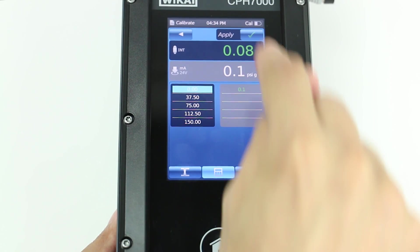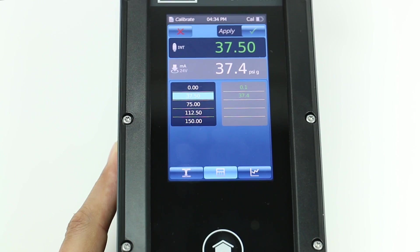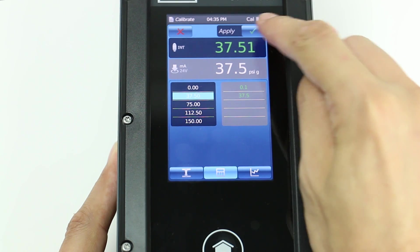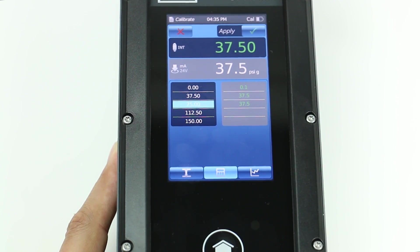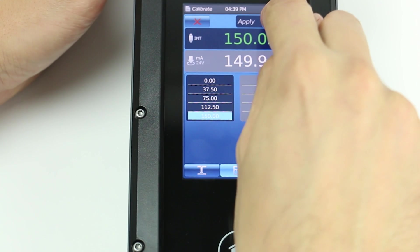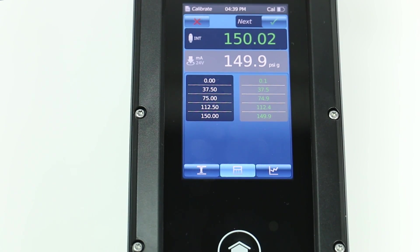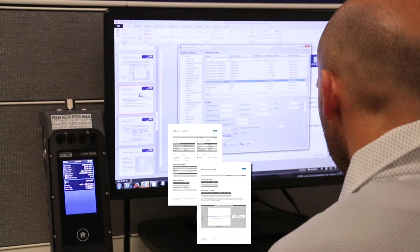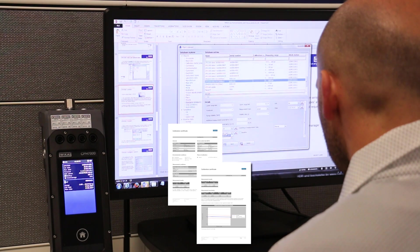The CPH-7000 can also document the procedure using features within the calibration function and will guide the user in an as-found calibration. When the calibration is complete, a calibration report can be exported to a file for your records.